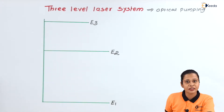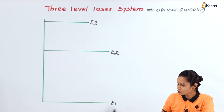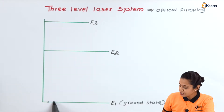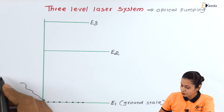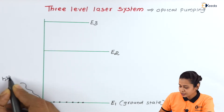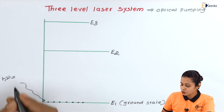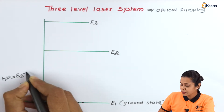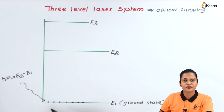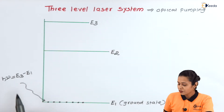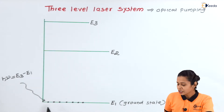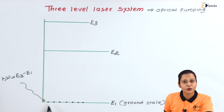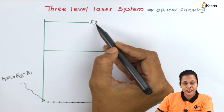Initially, the particle which is present in the ground state will absorb a photon of suitable frequency. The photon of energy h-nu should be equal to E3 minus E1 — the exact energy difference between these two energy levels. When this amount of energy is incident on the particle in the ground state, this particle will absorb that energy and jump into the excited state E3.